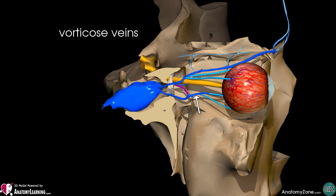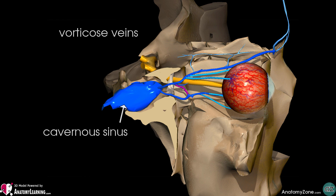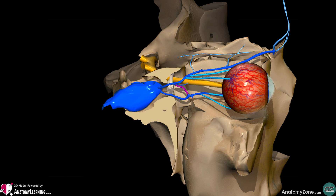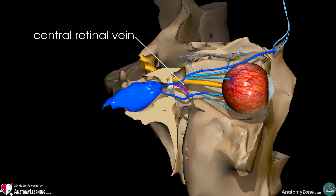The ophthalmic veins then drain into the cavernous sinus, which you can see here situated within the sphenoid bone, just lateral to the sella turcica. In addition to these veins, there is also a central retinal vein, which you can see here, and this accompanies the central retinal artery.